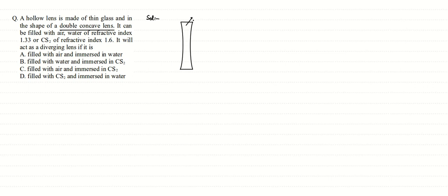Now for this concave lens, say the first one — if this concave lens has a refractive index inside it, say that is n2, and outside refractive index is n1, and if n2 is greater than n1, then this bi-concave or double concave lens acts as a diverging lens. This is the first condition.